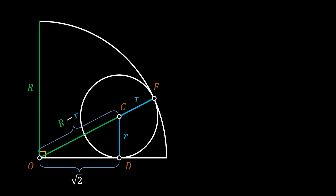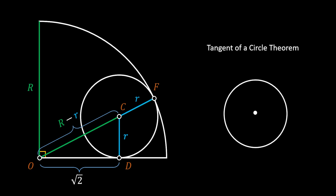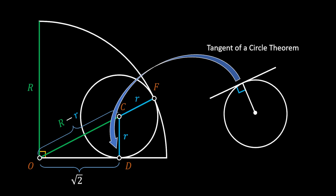Now we will find the angle at point D using the tangent-over-circle theorem. This theorem states that if we have a circle with a tangent line and we draw the radius to the intersection point of the tangent line and the circle, this radius will always be perpendicular to the tangent line. We can apply this theorem at point D, because line OD is a tangent to our small inscribed circle and CD is a radius of our smaller circle. So the angle at point D must be a right angle.